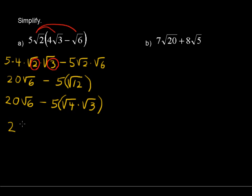So let's write 20√6 minus 5 times 2 times √3. We've just taken this √4 and rewritten it as 2. And then let's just continue to simplify here.